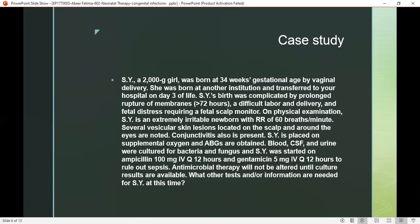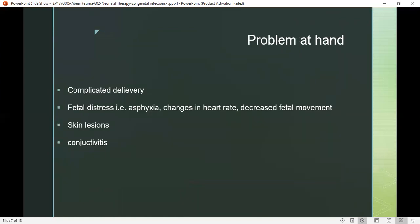Conjunctivitis is present. Supplemental oxygen was provided and arterial blood gases were obtained. Blood, cerebrospinal fluid, and urine cultures have been sent for bacterial testing. Treatment has been started with ampicillin and gentamicin. The cultures have not yet come back, so the question is: which tests and antimicrobial therapy should we continue, and what other medications should we suggest? The key problems are complicated delivery, fetal distress, asphyxia, skin lesions, and conjunctivitis.